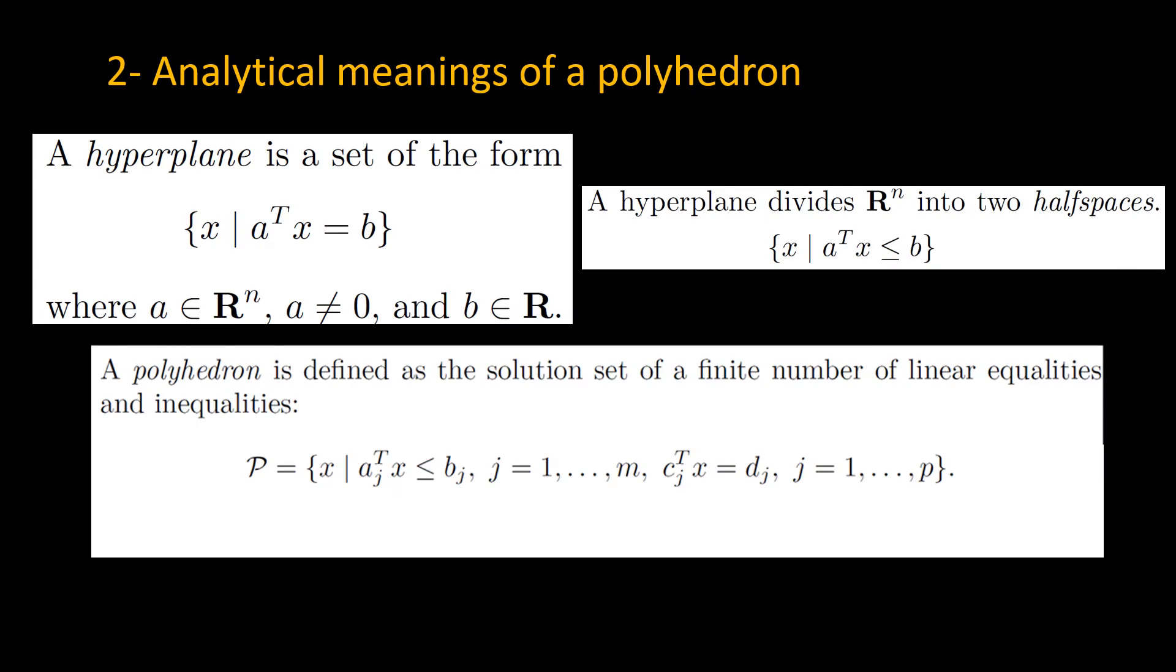In the second video of the current playlist, we learned that a hyperplane is associated with linear inequalities like this, and a half space is associated with linear inequalities like this. If you don't know what a hyperplane or half space is, please refer to my video on them. I'll put a link to that video in the description section below. Now the question is how to handle a set of points that are common among multiple half spaces and hyperplanes.